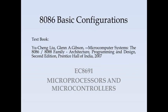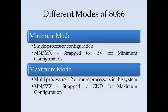Hello everyone. In this video we will see the different basic configurations for the 8086 microprocessor. There are two different modes for the 8086 microprocessor. The first one is called the minimum mode — it is nothing but the single processor configuration. Whereas the maximum mode is the one in which there will be more than one processor in the system. For the minimum mode, the pin MN/MX should be connected to plus 5 volts, whereas for the maximum mode it should be connected to ground.